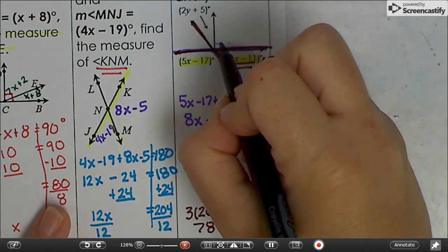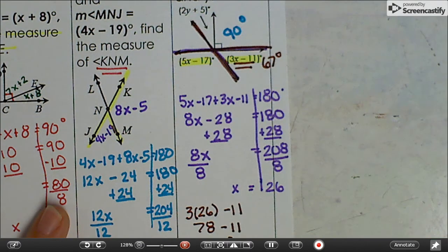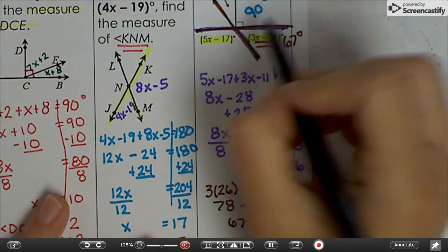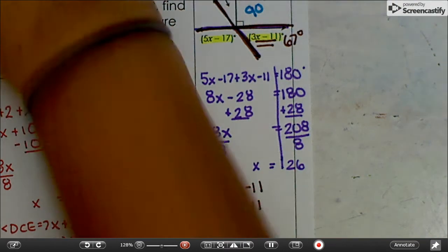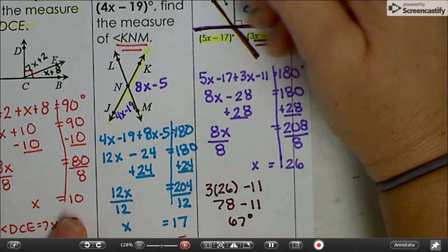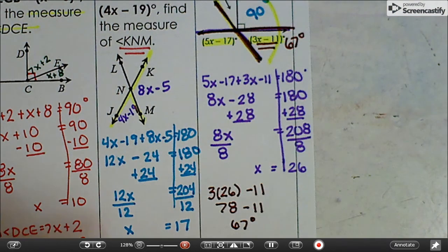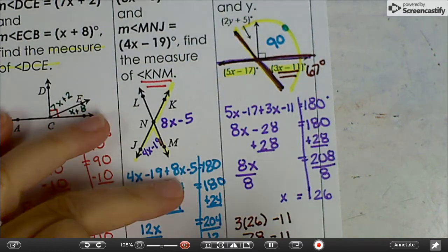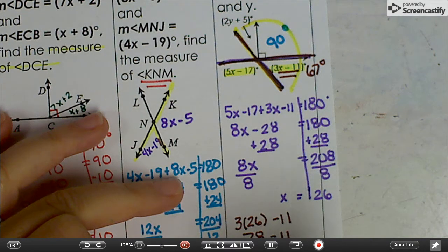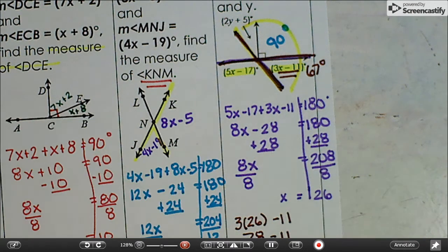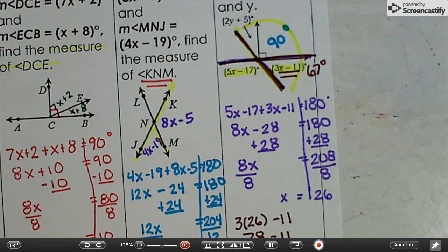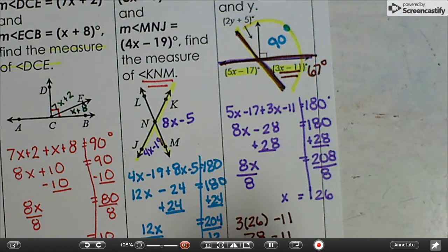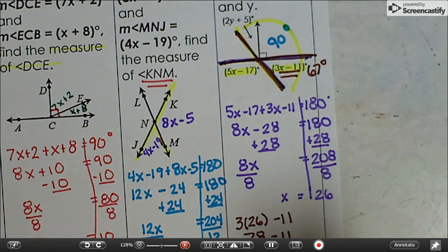What does that box mean? It means that this angle is 90 degrees. And these three angles together add up to 180 degrees because they're all together. So I'm going to write 2y plus 5 plus 90 plus 67 equals 180. Combine like terms. 2y plus 162 equals 180.